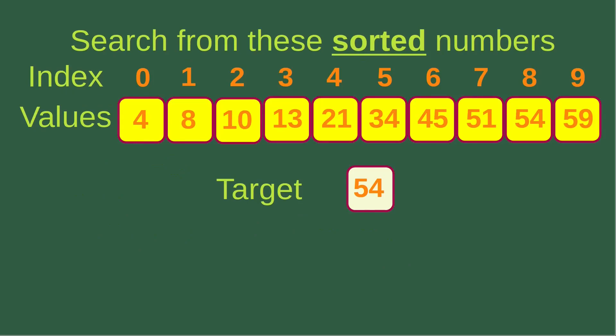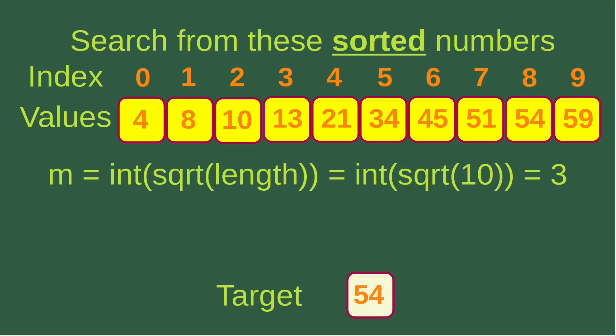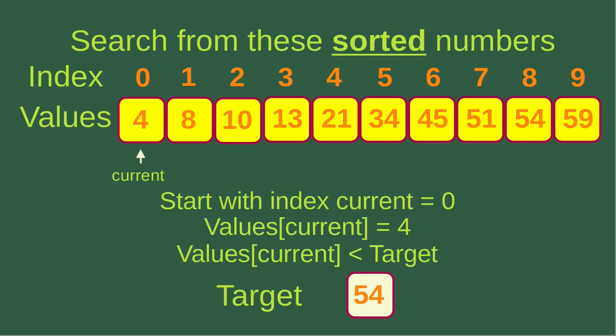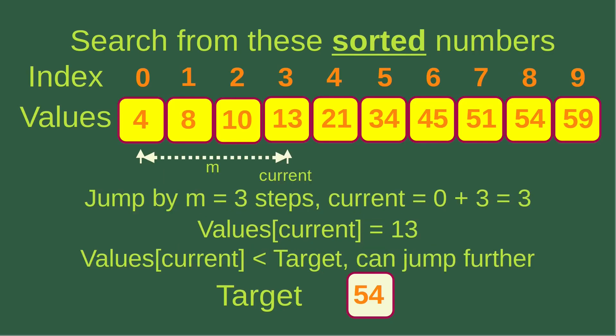Now let us see an example. Suppose I want to find 54 from these values which are already sorted, and the indices are given. According to the previous equation, we need to find out the jump size, which is equal to the square root of 10, where 10 is the length of the array. Since root 10 is not an integer, we just take the integer part, which means m is now 3. We start with the first element at index 0, called current. The value at this current index is 4, and of course 4 is smaller than our target 54. So we jump by m equals 3 steps.